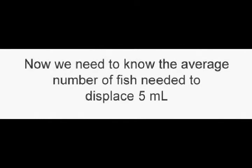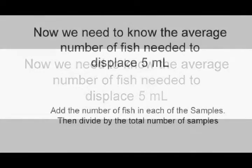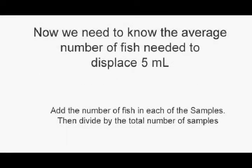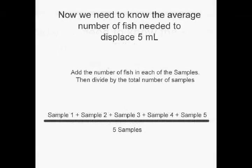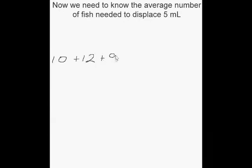With the 5 samples recorded, the average number of fish needed to displace 5 milliliters can be calculated. To calculate the average, we will add the number of fish in each of the samples taken and divide by the number of samples. You can see the formula here. Add all the fish in samples 1 through 5 and divide by 5.